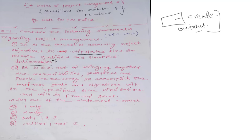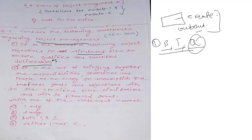This is asking about project management. We studied in the past module what is project, what is management, and the combination — project management. So this is the definition of project management: it is the process of attaining project objectives in stipulated time to produce quantified and qualified outputs. So quality should be there, quantity should be there, and we should have proper time and proper budget. So the first statement is right.